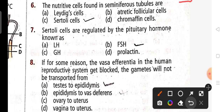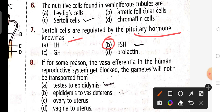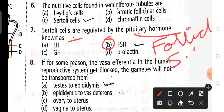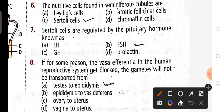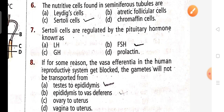Seventh question: Sertoli cells are regulated by the pituitary hormone known as FSH — follicle stimulating hormone. When FSH is released, Sertoli cells are activated and help in spermatogenesis. So the eighth option, option B, is correct.